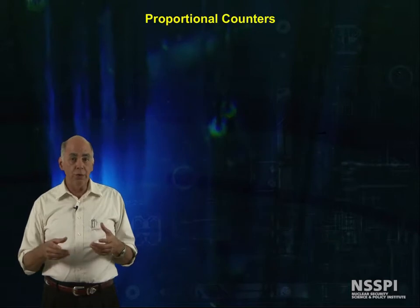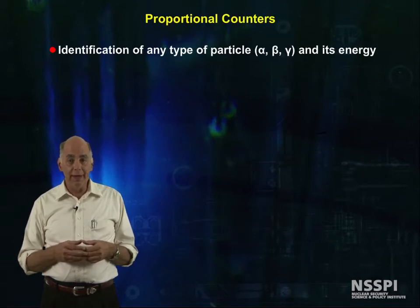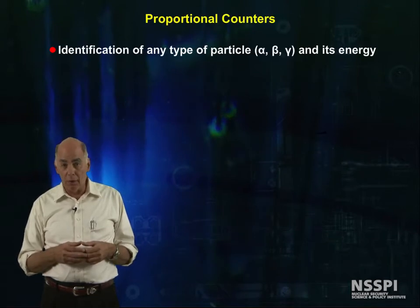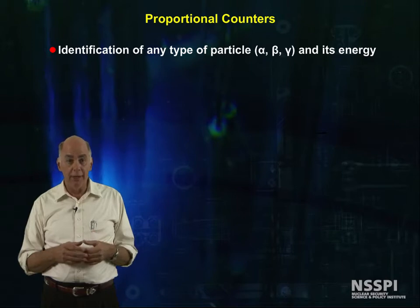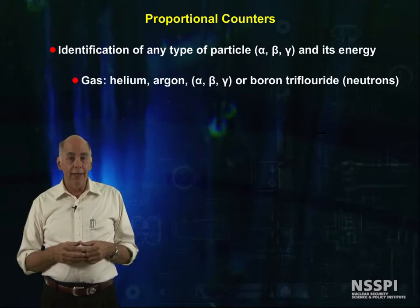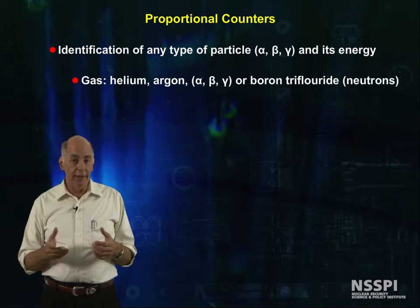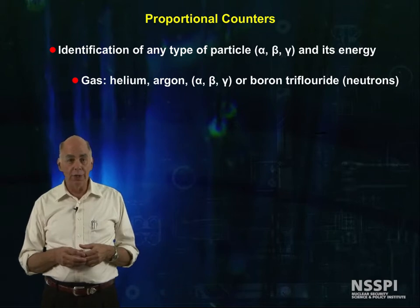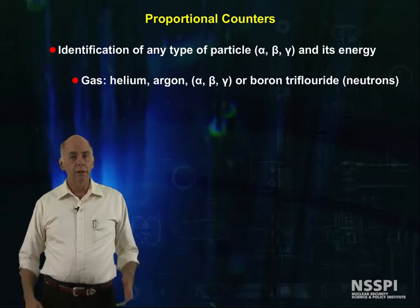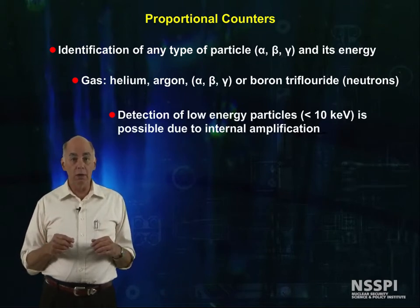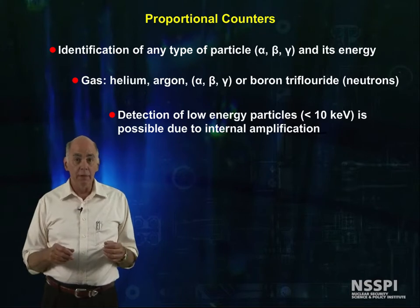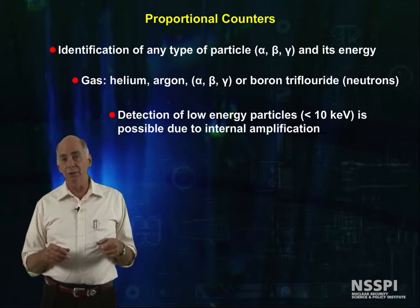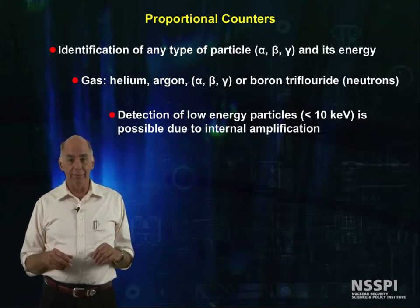With proportional counters, we can identify the type of particle — whether it's alpha, beta, or gamma — and its energy. For the counting gases, helium or argon for alpha, beta, and gamma, or boron trifluoride for neutrons, are the most common. Detection of low energy particles, below 10 keV, is possible due to the gas amplification.